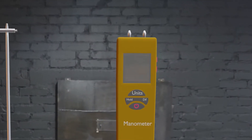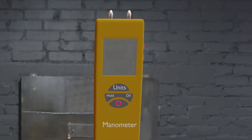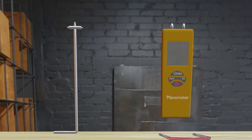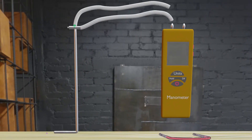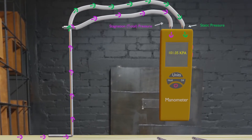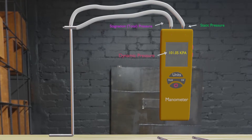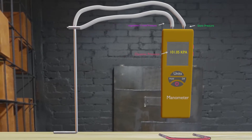That's how a digital manometer works. It sends the stagnation and static pressure from the Pitot tube using a pressure transducer, and this pressure difference gives the dynamic pressure. If you want to visualize dynamic pressure in an analog way, use a U-tube manometer.